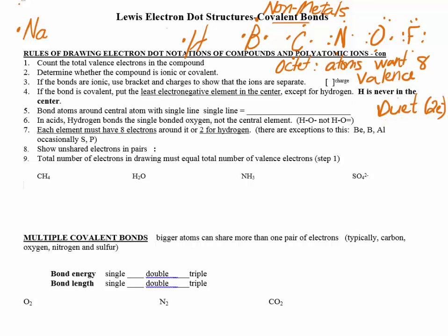Let's look at the rules. The first step is to count valence electrons — that's where the periodic table comes in. You cannot skip this step, whether it's ionic or covalent. Look at the first element and ask: is it a metal? If it's ionic, that's when we use brackets. If it's covalent, the least electronegative atom needs to go in the middle.